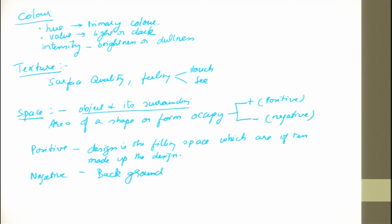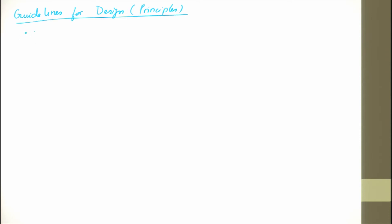These are the basic element features we covered. On top of these, we have guidelines called principles of design: rhythm, proportion, emphasis, balance, and unity.